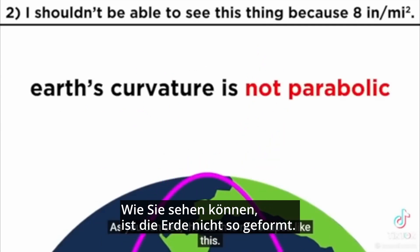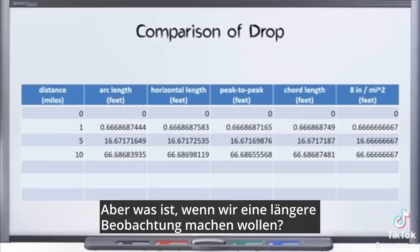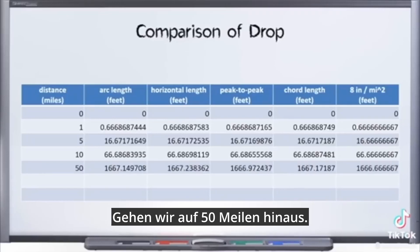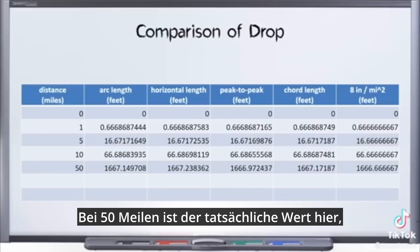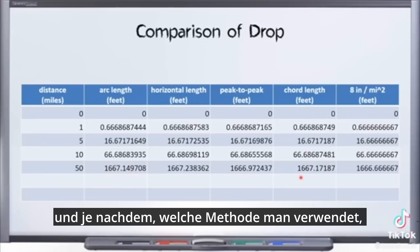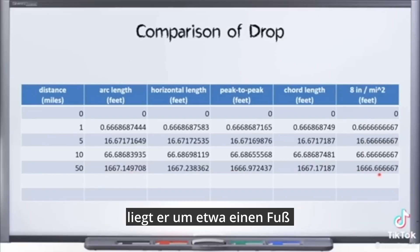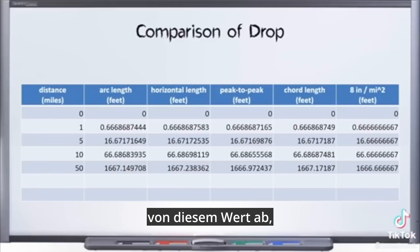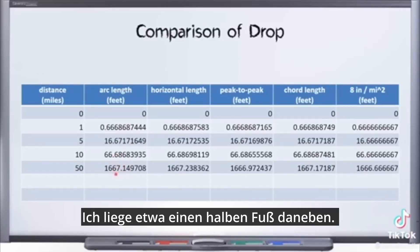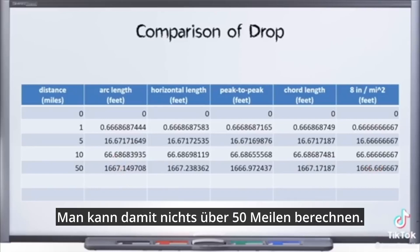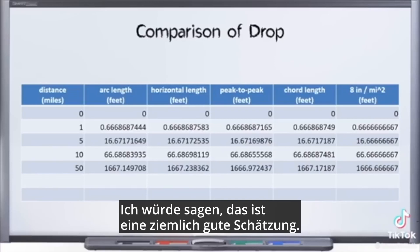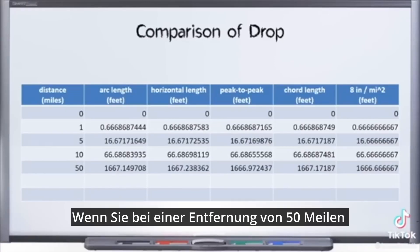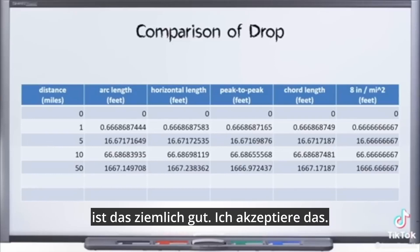As you can see, the earth is not shaped like a parabola. But what if we're doing a longer observation and going out further? Let's go out to 50 miles. The actual value is there, and depending on which method you use, it's off by about half a foot. Based on arc length — which is my favorite — I'm off by like half a foot. 'You can't calculate anything with it.' Over 50 miles, I'm going to say that's a pretty good estimate. If 50 miles away you're only off by half a foot, that's pretty good. I'll accept that.